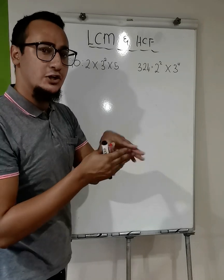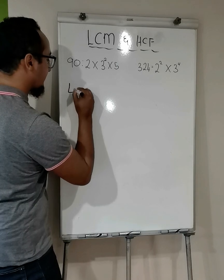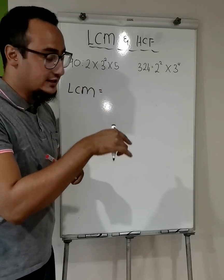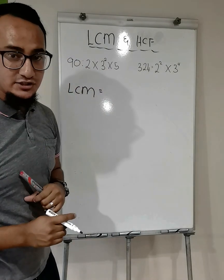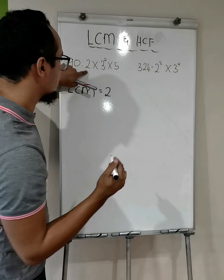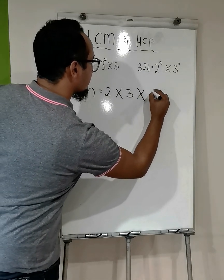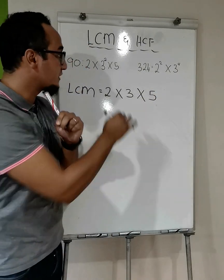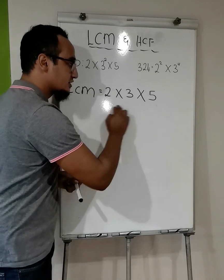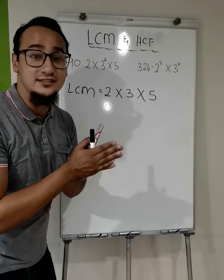So firstly, when we're busy with an LCM, I look at each different number that I see within my two prime factorizations. The first number is 2 — I'm only writing down the bases, the big numbers. The next number is 3, the next number is 5. Do I see another different number within my product of primes? The answer is no. The next step is: from this, you take the one with the highest exponent. LCM — highest exponent.